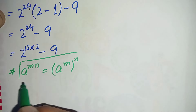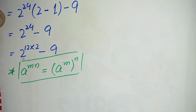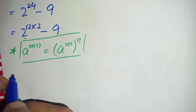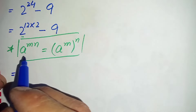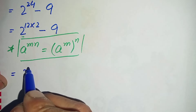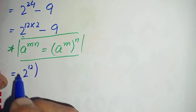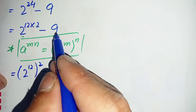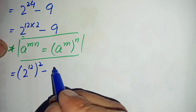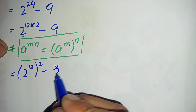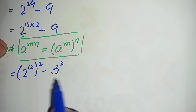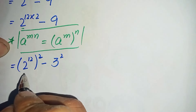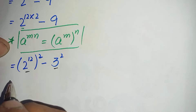By using this exponential property in this term, it will become 2 raised to power 12, all raised to power 2, minus 9. And again we will change this 9 to its exponential form, so we can write 9 as 3 raised to power 2, or 3 square.